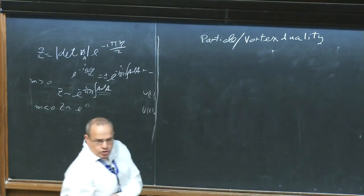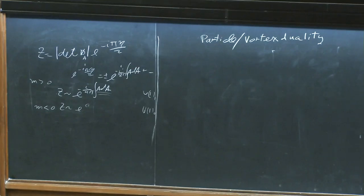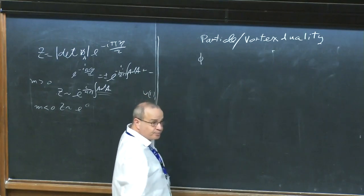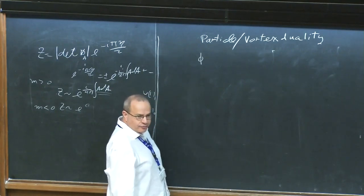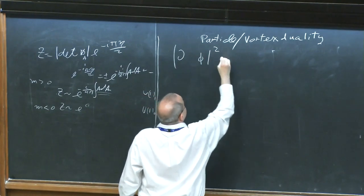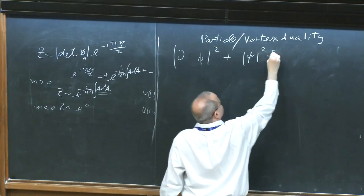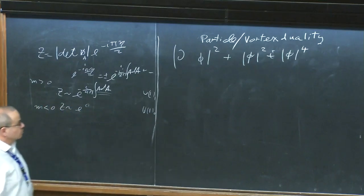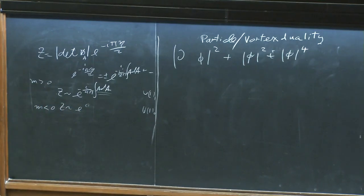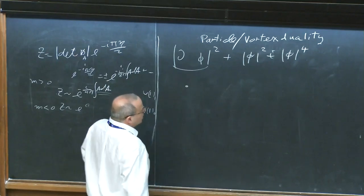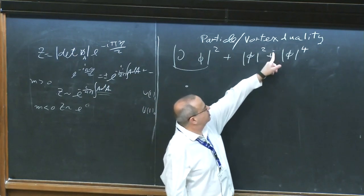I'll explain the term once we understand what it is. We start with a theory that has a single complex scalar field phi and write a Lagrangian for it. So the |phi|^2 and |phi|^4 interactions are relevant in three dimensions. We start from a free field theory given by this interaction and then turn on these relevant interactions.